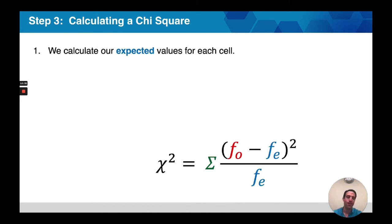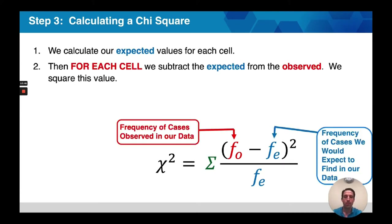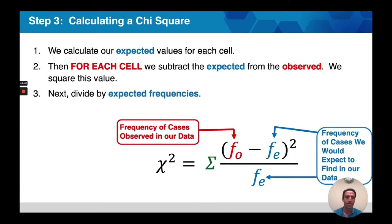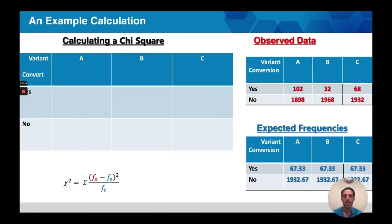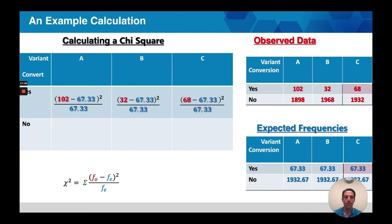Now we're at the point of calculating our chi-square. First, we calculate our expected frequencies for each cell — we've done that. Next, for each cell, we take our frequency observed minus our frequency expected. We then square that value — and the nice thing is, even if you flip it around and mess it up, it's okay because squaring always produces a positive value. Finally, we divide by our frequency expected. The sigma means we sum it all up. Looking at an example with observed and expected values highlighted in respective tables, we perform this for each cell.